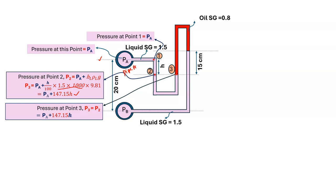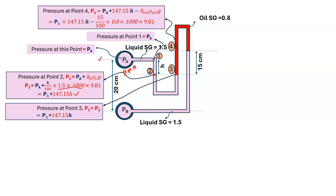Going upward from point 3, pressure decreases. So the pressure at point 4 is PA plus 147.15·H minus the manometric liquid pressure: minus (15/100) × 0.8 × 1000 × 9.81. That gives the pressure at point 4.